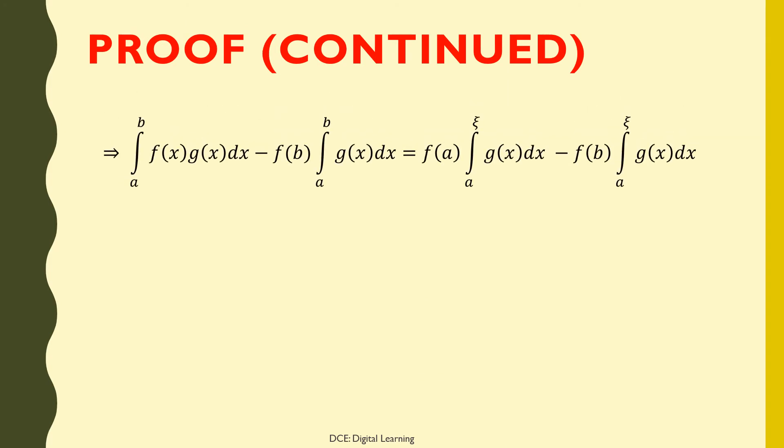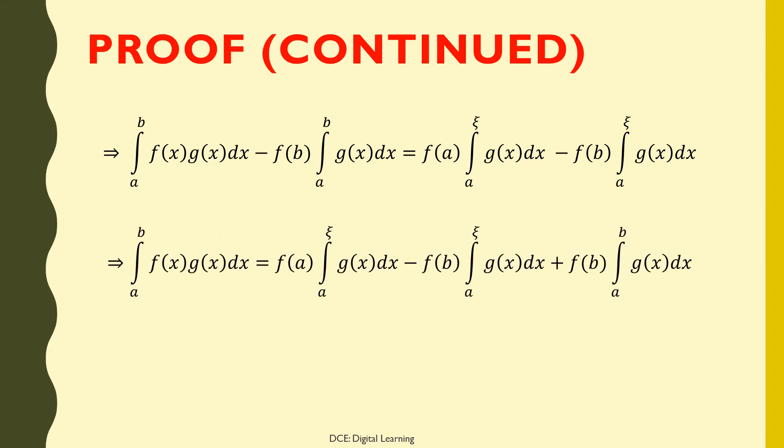On rearranging, the integral of f(x)·g(x) dx from a to b minus f(b) times the integral of g(x) dx from a to b equals f(a) times the integral of g(x) dx from a to ξ minus f(b) times the integral of g(x) dx from a to ξ. This implies the integral of f(x)·g(x) dx from a to b equals f(a) times the integral of g(x) dx from a to ξ minus f(b) times the integral of g(x) dx from a to ξ, plus f(b) times the integral of g(x) dx from a to b.